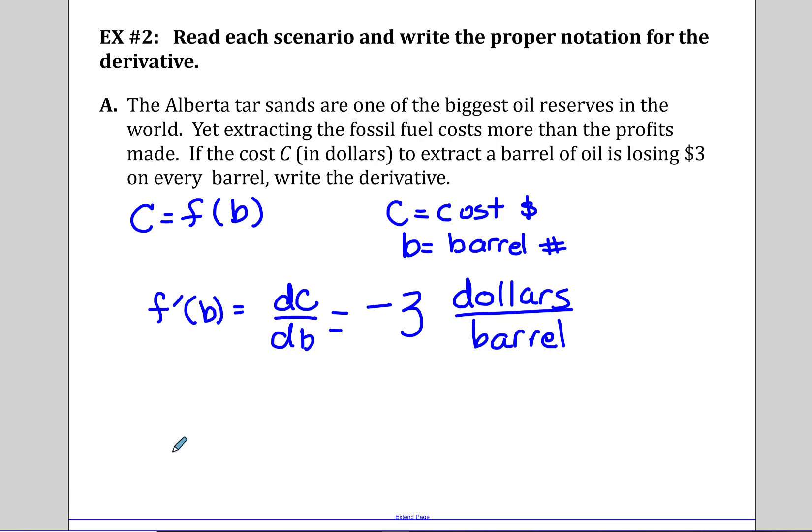So the rate of change of the cost with respect to the barrels is negative three, or we could use Leibniz notation and say dC/dB at the time t is negative three at some time t.